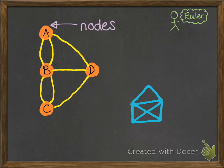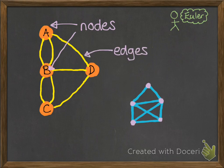We need some names for things. These orange blobs — the bits of the graph that you go between — they're called nodes. So A is a node, as is B, C, and D. The connecting lines are called edges. Just like in Königsberg and our house drawing problem, anything that joins up two nodes is called an edge.